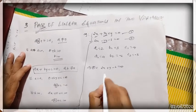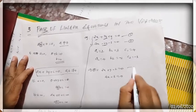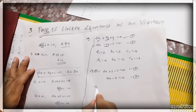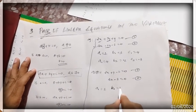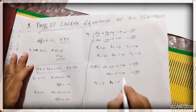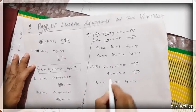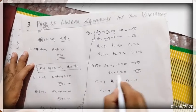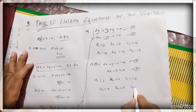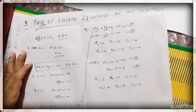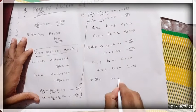Example 2: 2x + y − 2 = 0 and 4x − 3 = 0. This is the first equation and that is the second. So a₁ = 2, b₁ = 1 (since the coefficient of y is simply 1), and c₁ = −2. Then a₂ = 4. There is no y term in the second equation, so b₂ = 0, and c₂ = −3.